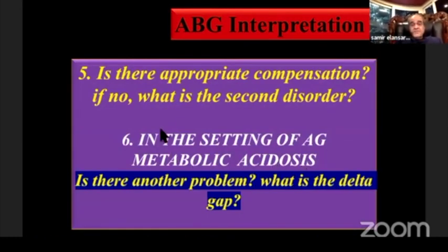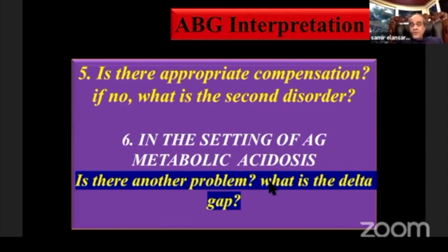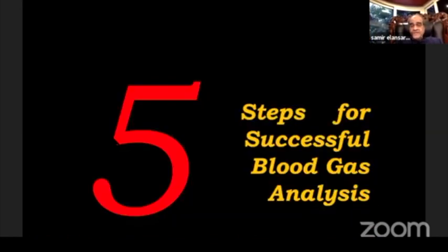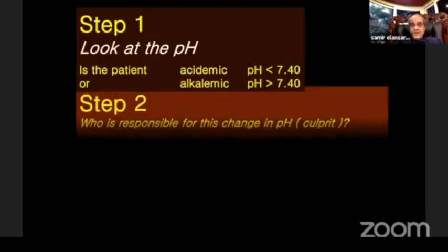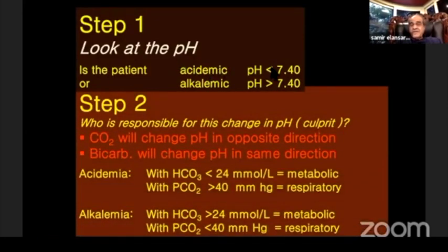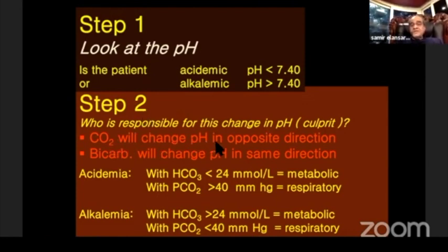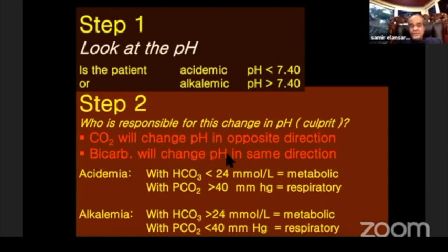Is there appropriate compensation? If not, what is the second disorder? In the setting of high anion gap metabolic acidosis, what is the delta gap? These are the five steps of successful blood gas analysis. Step one: look at the pH — acidemic if less than 7.4, alkalemic if more than 7.4. Step two: CO2 changes pH in the opposite direction. If pH and CO2 are in opposite directions, it is respiratory. If pH and HCO3 are in the same direction, it is metabolic.